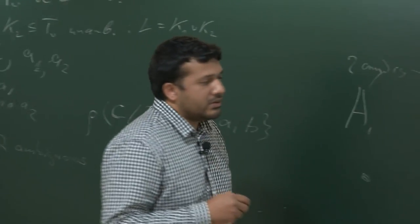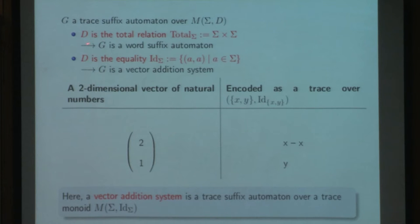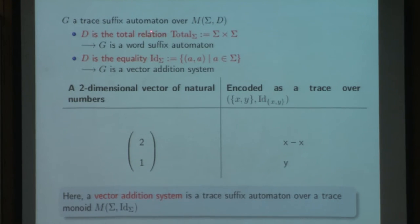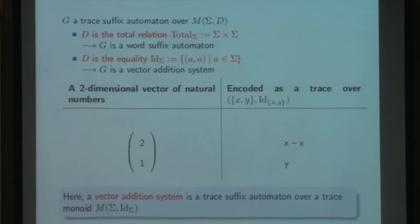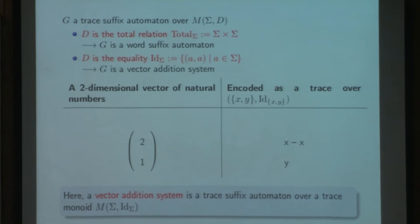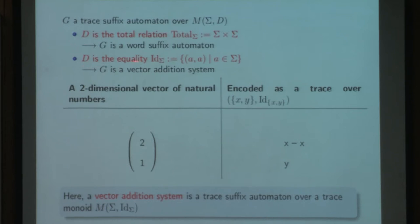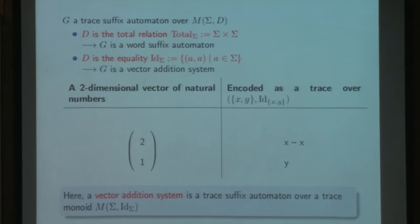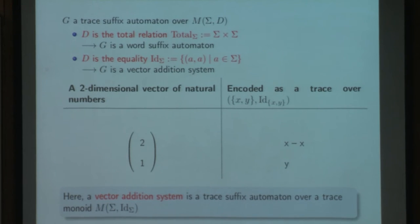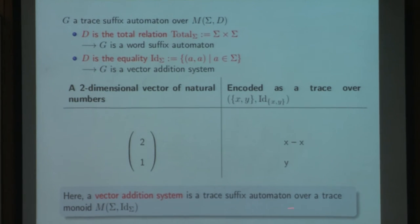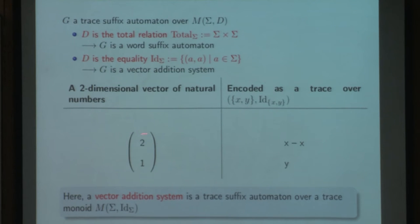Now let us consider vector addition systems. Observe that for the dependence relation of a trace monoid, we have two extreme cases. First, the dependence relation can be the total relation — then the trace suffix automaton is just a word suffix automaton. But we can also have the dependence relation equal to equality, and then we have a vector addition system. Here a vector addition system is just a trace suffix automaton over a commutative monoid. Here you can see how a two-dimensional vector of natural numbers is encoded on an alphabet with two letters.